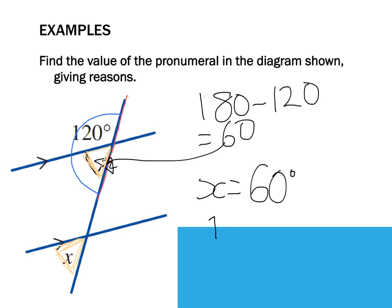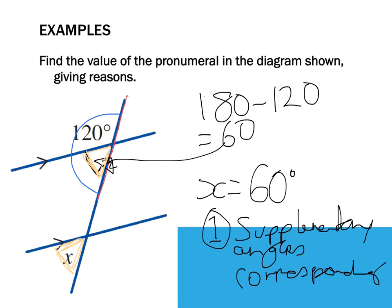Reasons: one - supplementary angles. Remember we learned that last lesson - supplementary angles. And then the second reason is corresponding. So first off, this guy in here, this little guy in here, was supplementary to the 120, and then once I found him, I knew that this little guy down the bottom was equal to this one here because they're both corresponding.